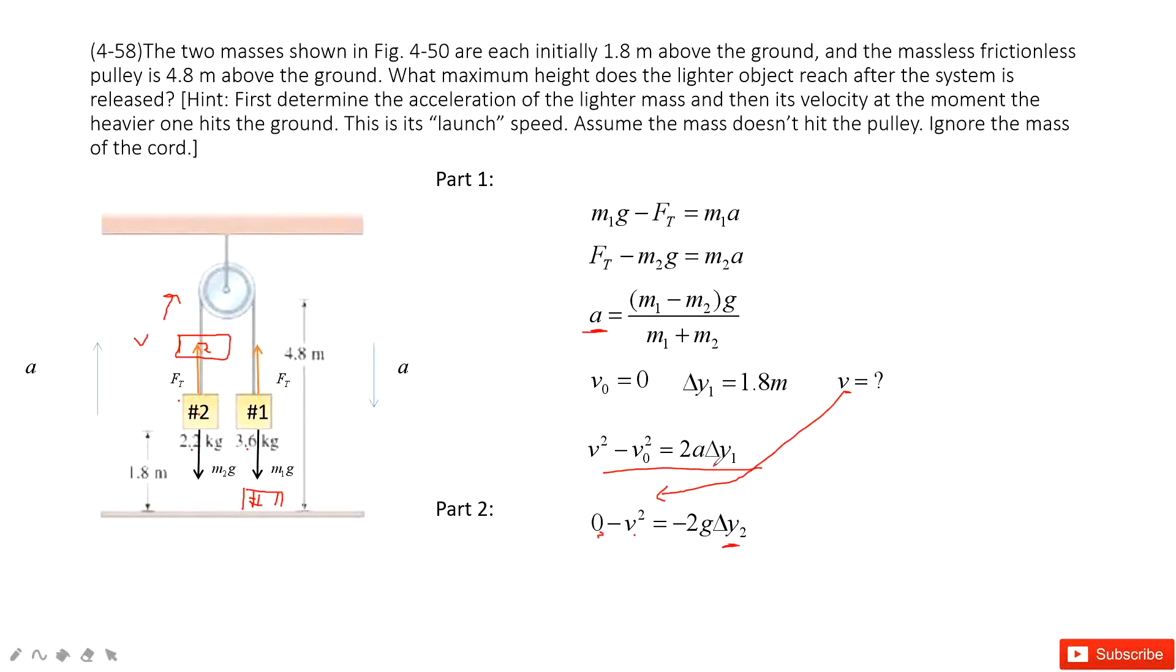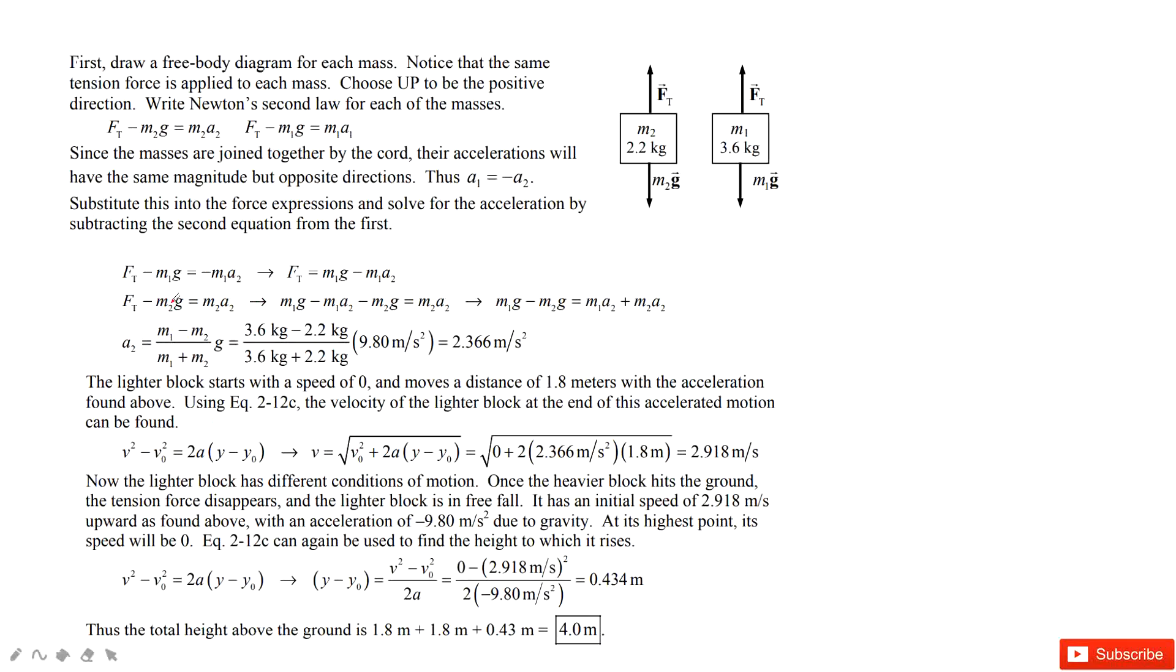After we find delta y2, so delta y1 plus delta y2 is the total displacement the number 2 moves. See, this is how we do this calculation.